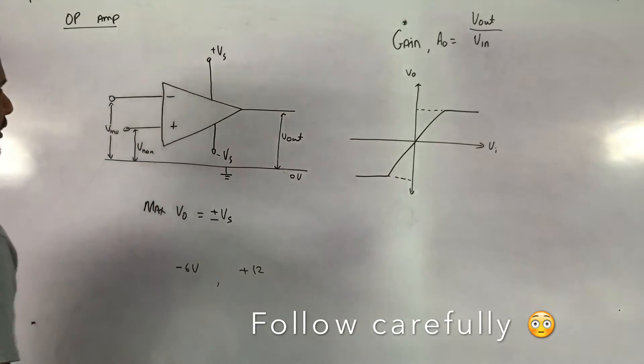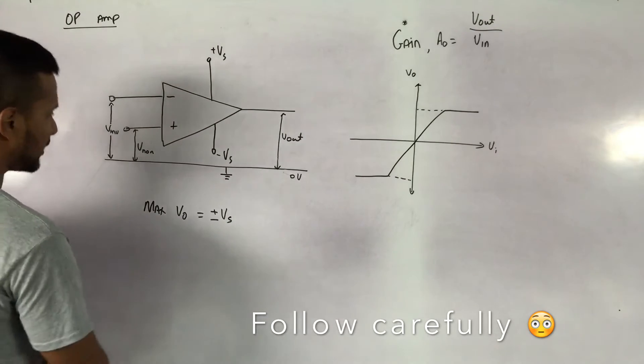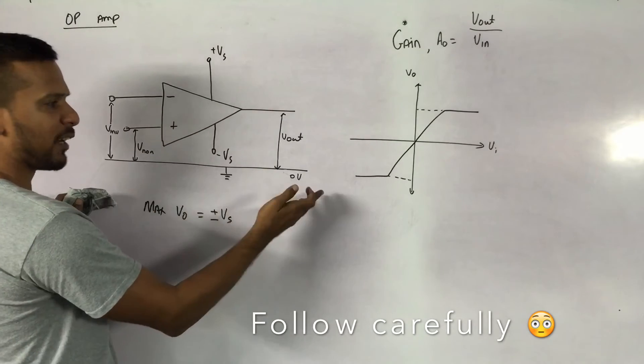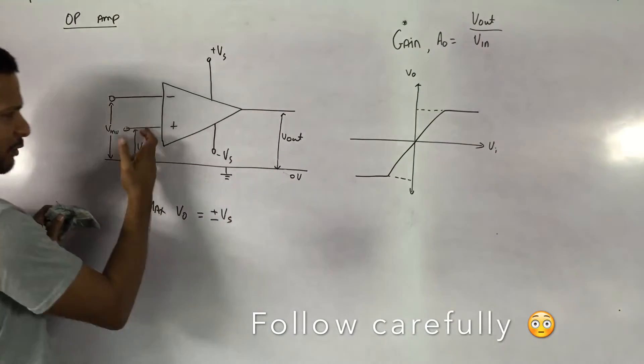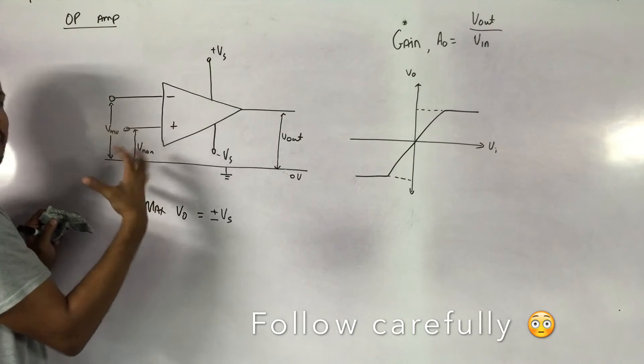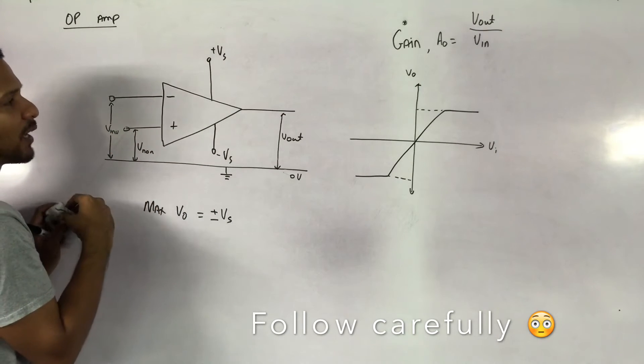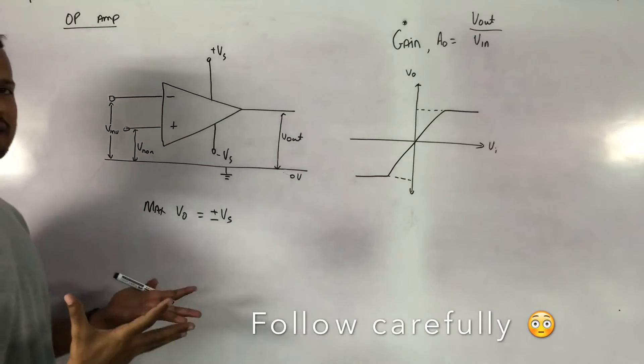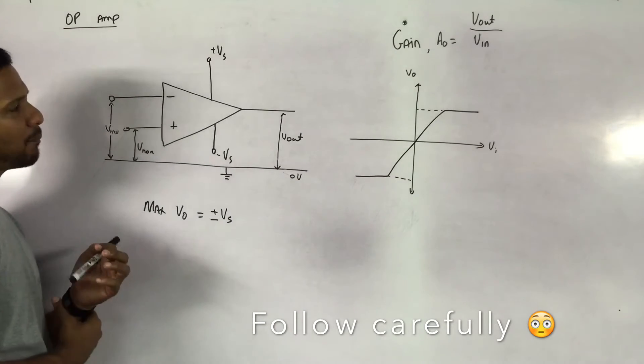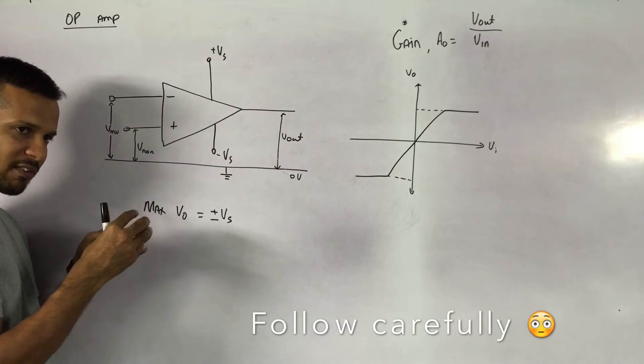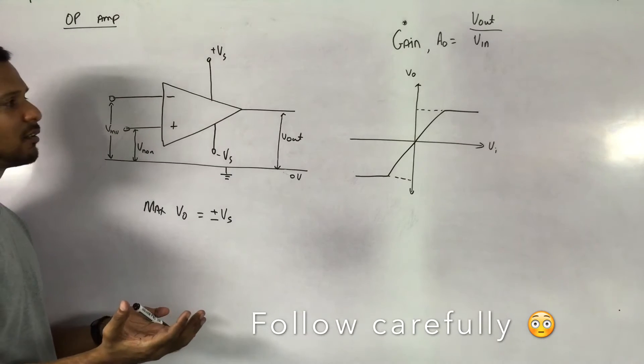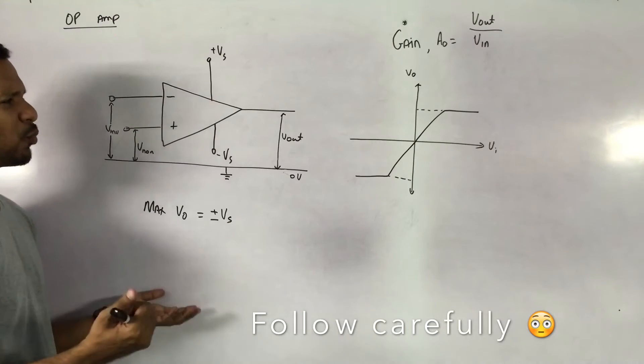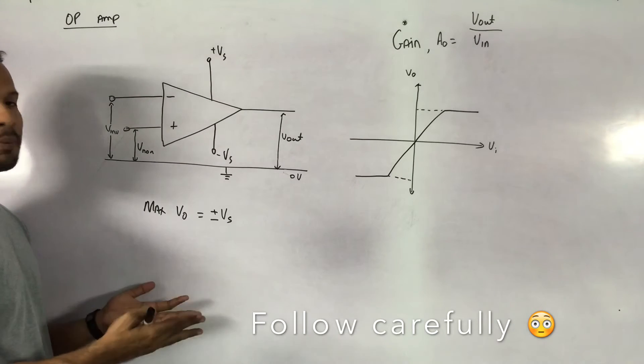So the op-amp has those two main terminals, the non-inverting and the inverting. The output is measured here. This is a zero rail. It simply represents a nice reference point between here and here to find the potential difference. So for an op-amp, the op-amp has a very high gain. The main concept behind the op-amp is that they take a very small value and give you a very large value. So what are the assumptions of an op-amp?